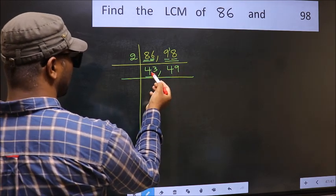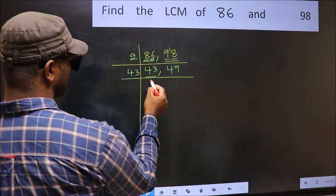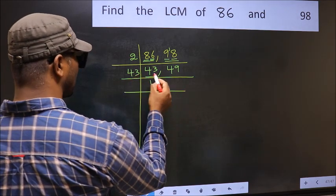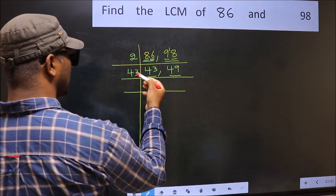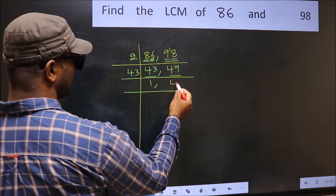Now here we have 43. 43 is a prime number. So 43, 1 is 43. The other number 49 is not divisible by 43. So you write it down as it is.